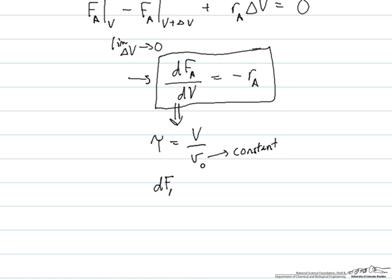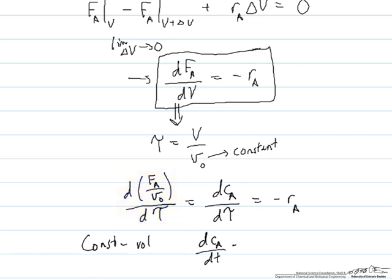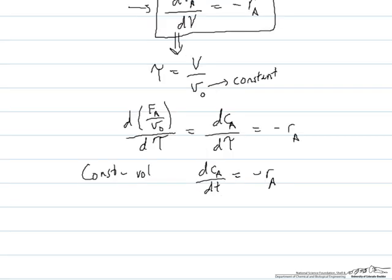We'll assume that the volumetric flow rate is a constant. We can re-express this design equation for the PFR in terms of tau by doing a variable substitution. Because the volumetric flow rate is constant, we were able to put that into the derivative, and so the fa over v naught becomes dCa d tau, and that's equal to the reaction rate.